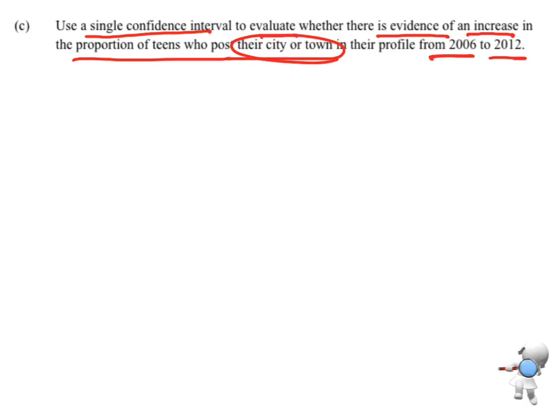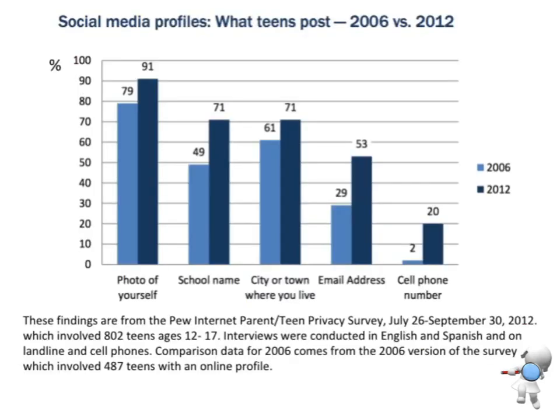So I'm comparing two things. I need to compare 2006 with 2012 and I need to look at the proportion of teens who post their city or town. I'm going to go back to this graph and I'm going to look. There's a bit there that talks about city or town posting. I can see the light blue is 2006. So there's 61% of teenagers in 2006 that agree with it and 71% in 2012.